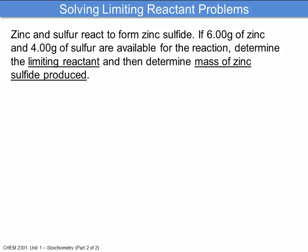Zinc and sulfur react to form zinc sulfide. If 6.00 grams of zinc and 4.00 grams of sulfur are available for the reaction, determine the limiting reactant and then determine the mass of zinc sulfide produced. These can at first seem fairly long questions, but they build on the same stoichiometry types of thought and steps that we were working on earlier in the class.